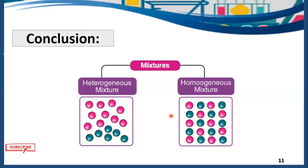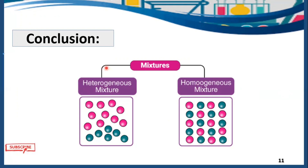In conclusion, a mixture is when two or more substances join together physically without any chemical interaction. There are two main types: heterogeneous mixture and homogeneous mixture. In heterogeneous mixtures, components are non-uniformly distributed and you can see them with your naked eye. In homogeneous mixtures, components are uniformly distributed and cannot be seen with the naked eye.